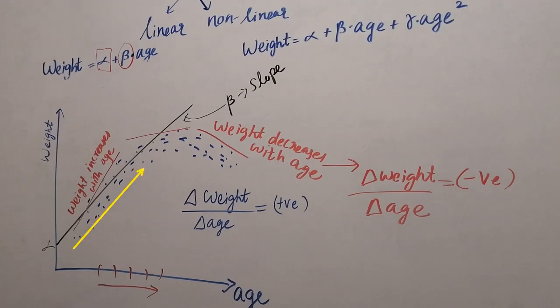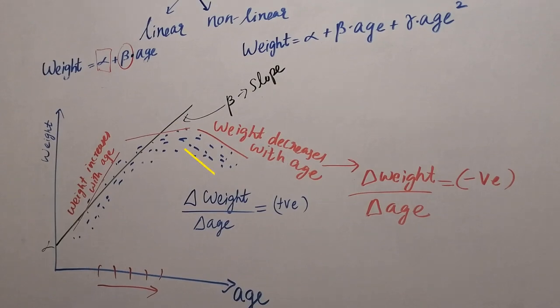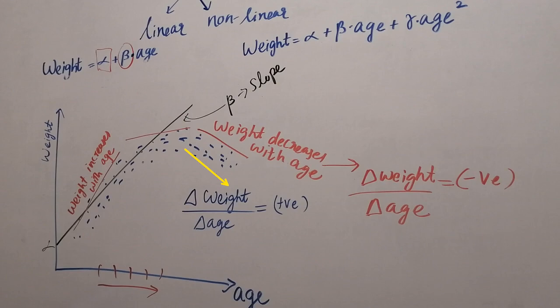Then at the middle age we can see that there is no change of weight with age at the middle part of the plot and after a certain point we can see a diminishing effect on weight with the age. Here we notice that weight decreases with age which means now that the slope is negative.